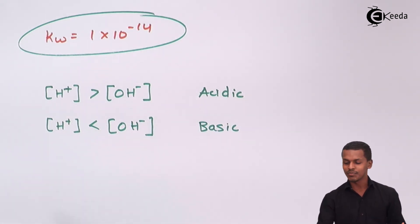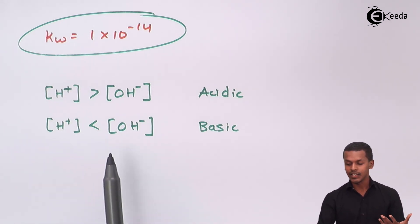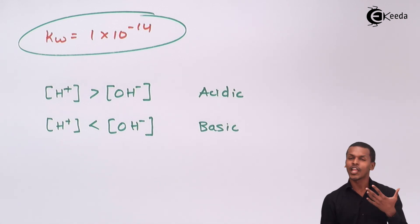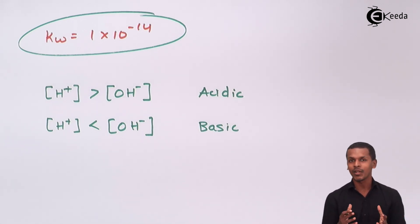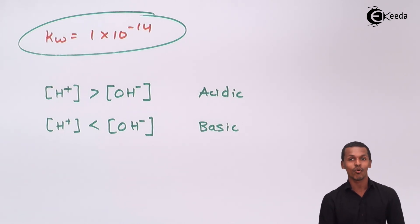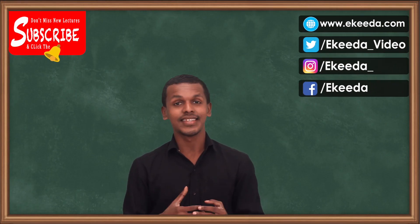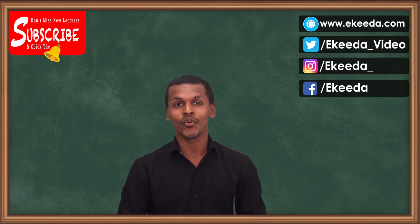When both concentrations are equal, the solution is neutral. Regardless of whether the solution is acidic, basic, or neutral, the product of H⁺ and OH⁻ ion concentrations — that is, KW — remains constant at a given temperature. These are the key expressions and terms involved in the ionic product of water.